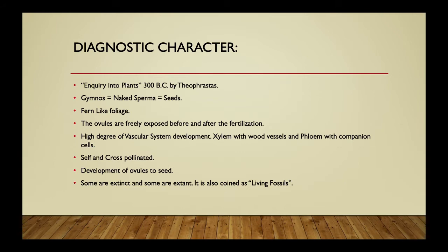Both self and cross-pollination occur in gymnosperms. Development of ovules into seeds is very important for maintaining their progeny from one generation to the next. Gymnosperms are also known as a 'living puzzle' because most of their evolutionary characters have remained the same since they first evolved.